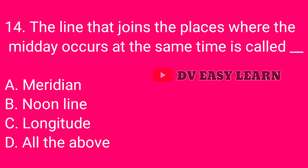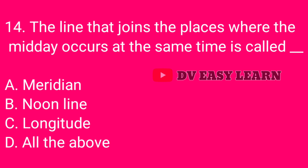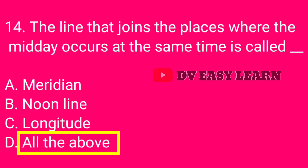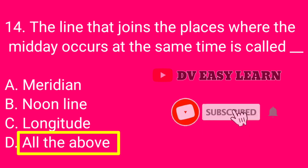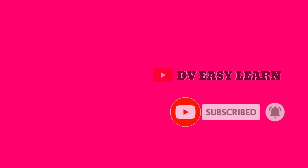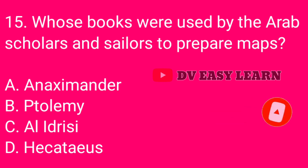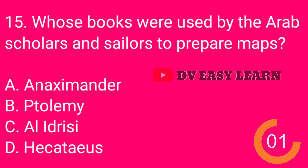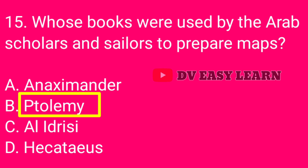Question number 14: The line that joins the places where midday occurs at the same time is called — correct answer: All of the above — Meridian, Noon line, Longitude. Question number 15: Whose books were used by the Arab scholars and sailors to prepare maps? Correct answer: Ptolemy.